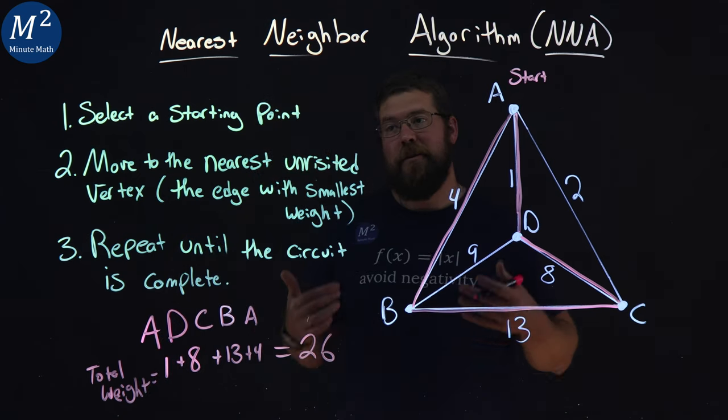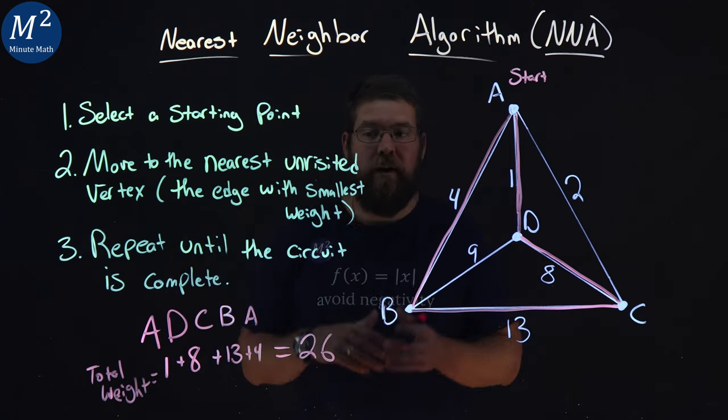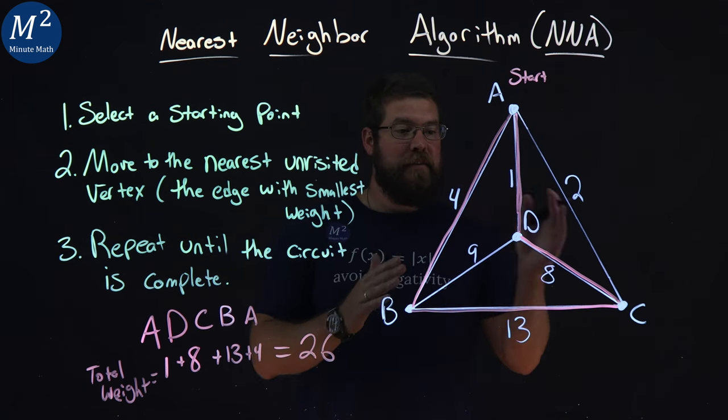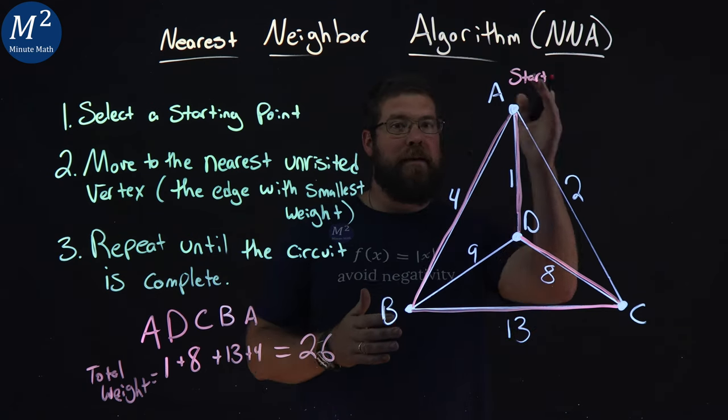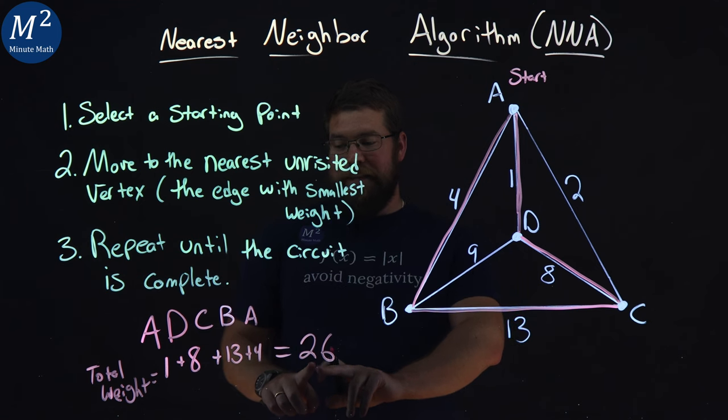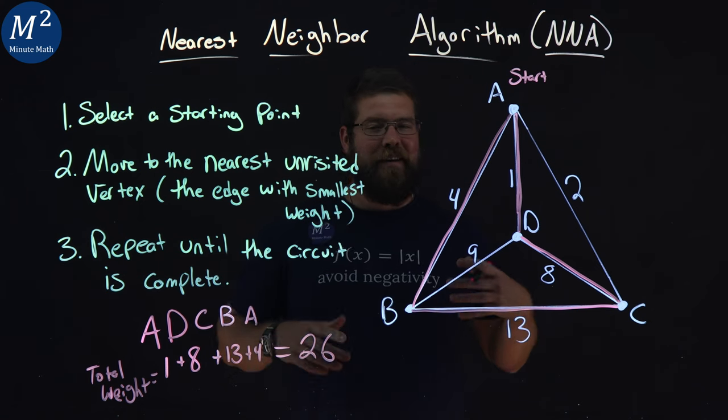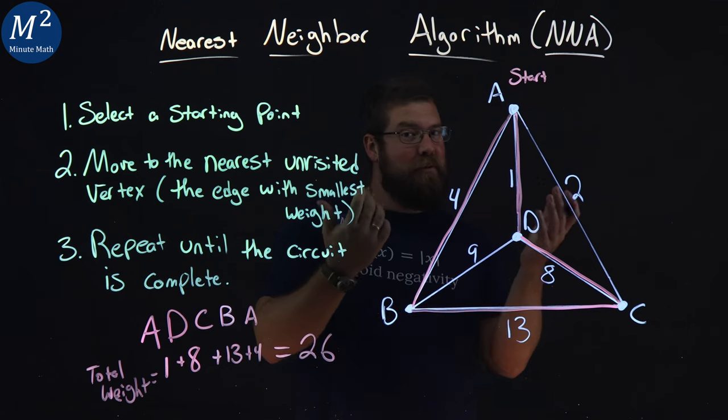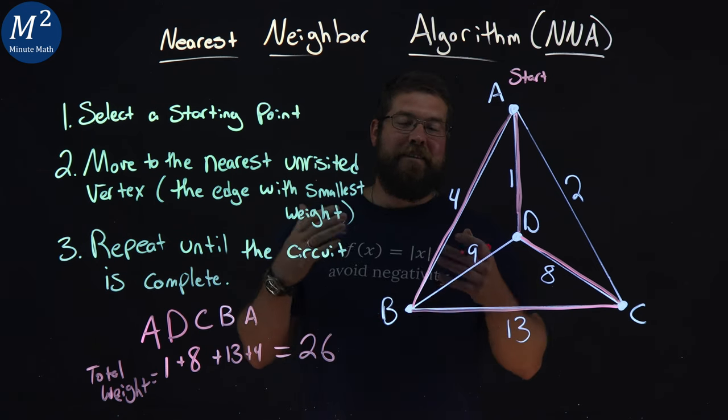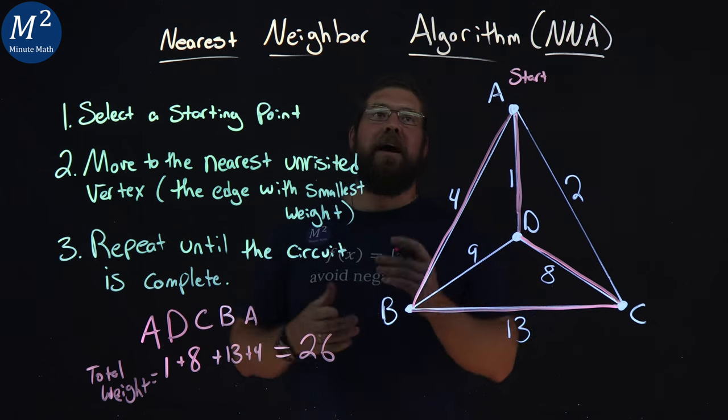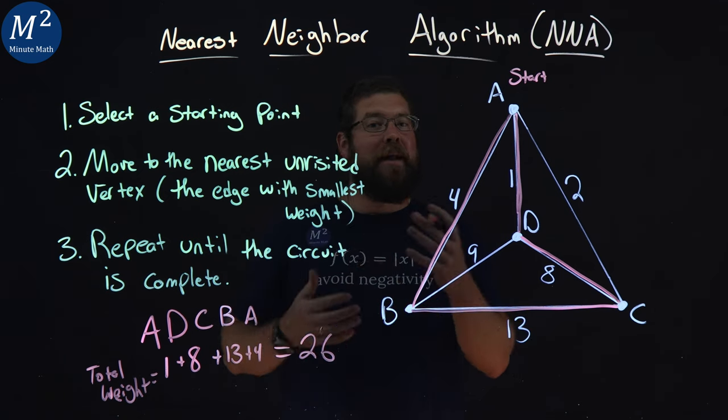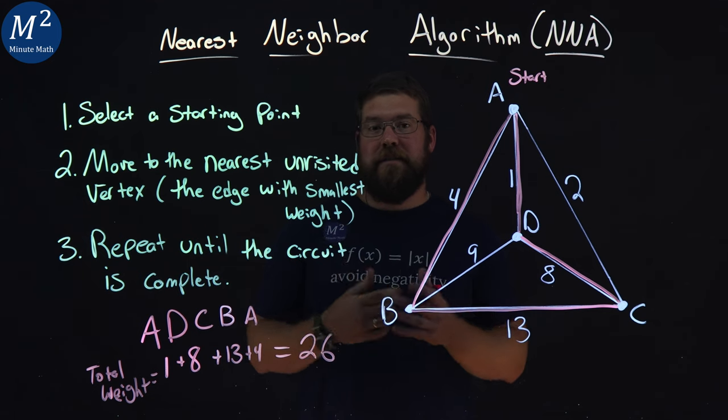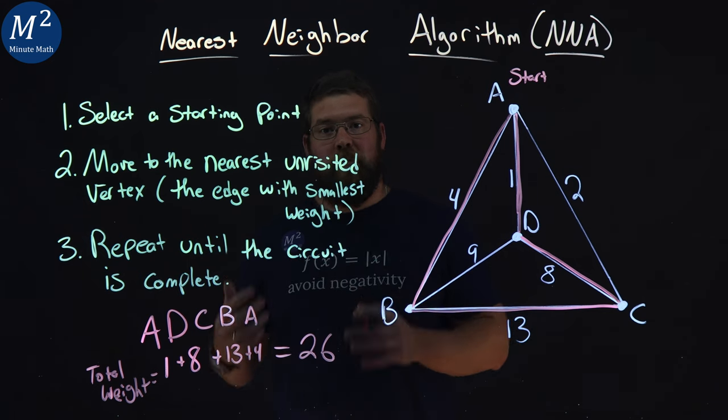So we applied the nearest neighbor algorithm here to this graph to find a Hamiltonian circuit, which we did, right? We had every single vertex only once. We came back to the beginning, and we got a weight of 26. Now, was this the fastest or the least weight circuit, Hamiltonian circuit that exists on this graph? The answer is no. The nearest neighbor algorithm doesn't always work. It's just an algorithm that might help us find a way, gives those rules to follow, but it doesn't always give us the lowest total weight.